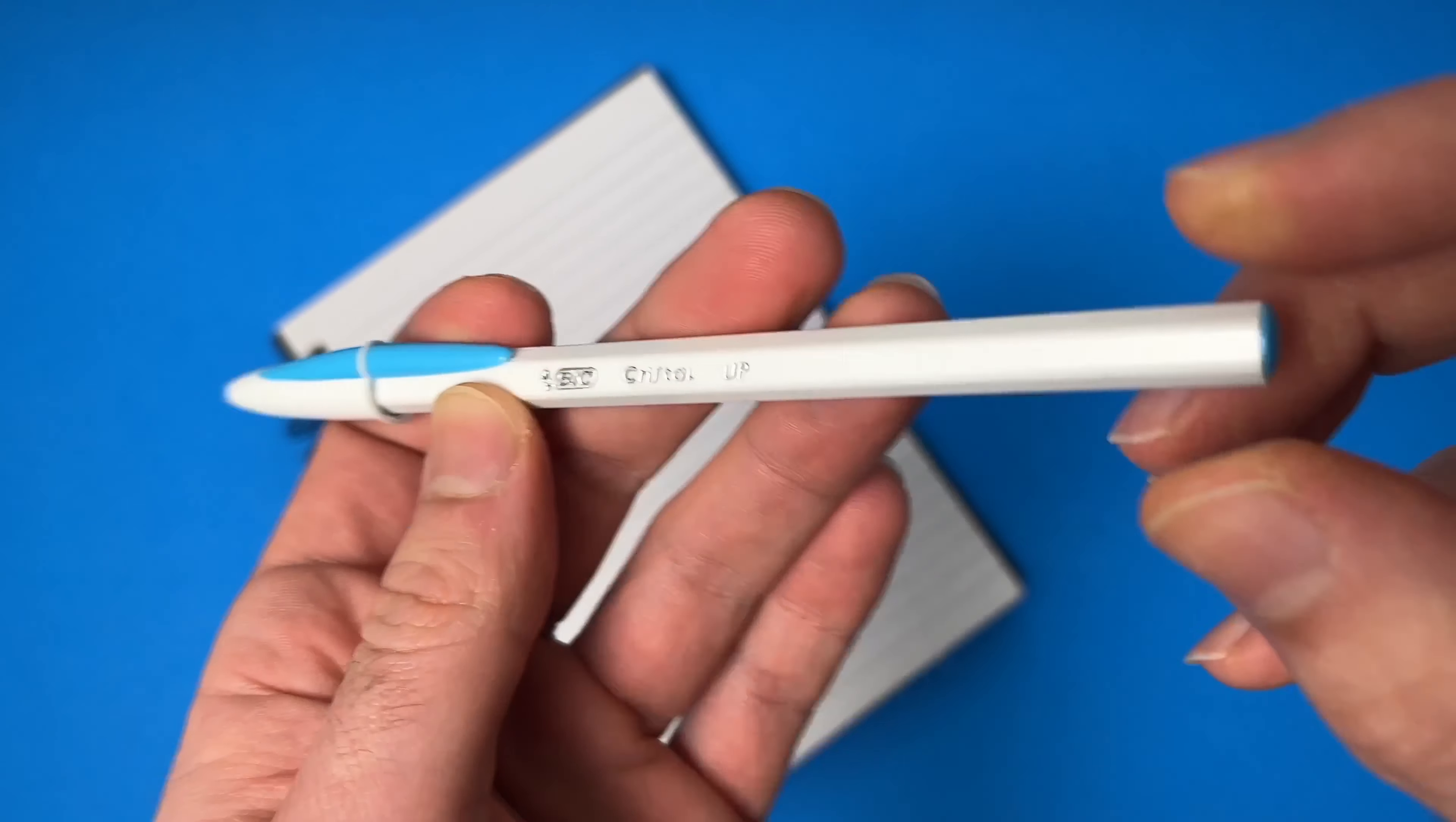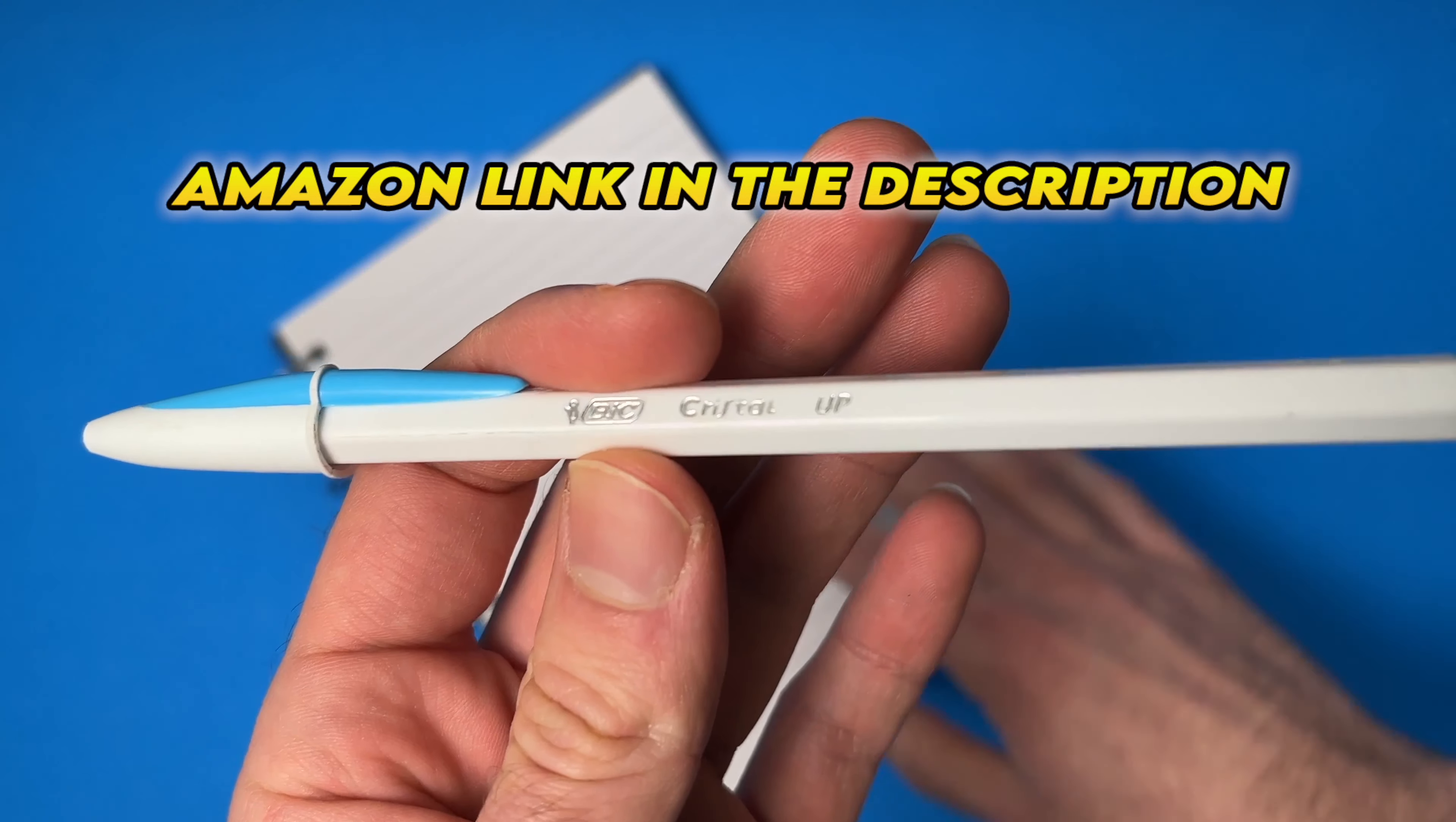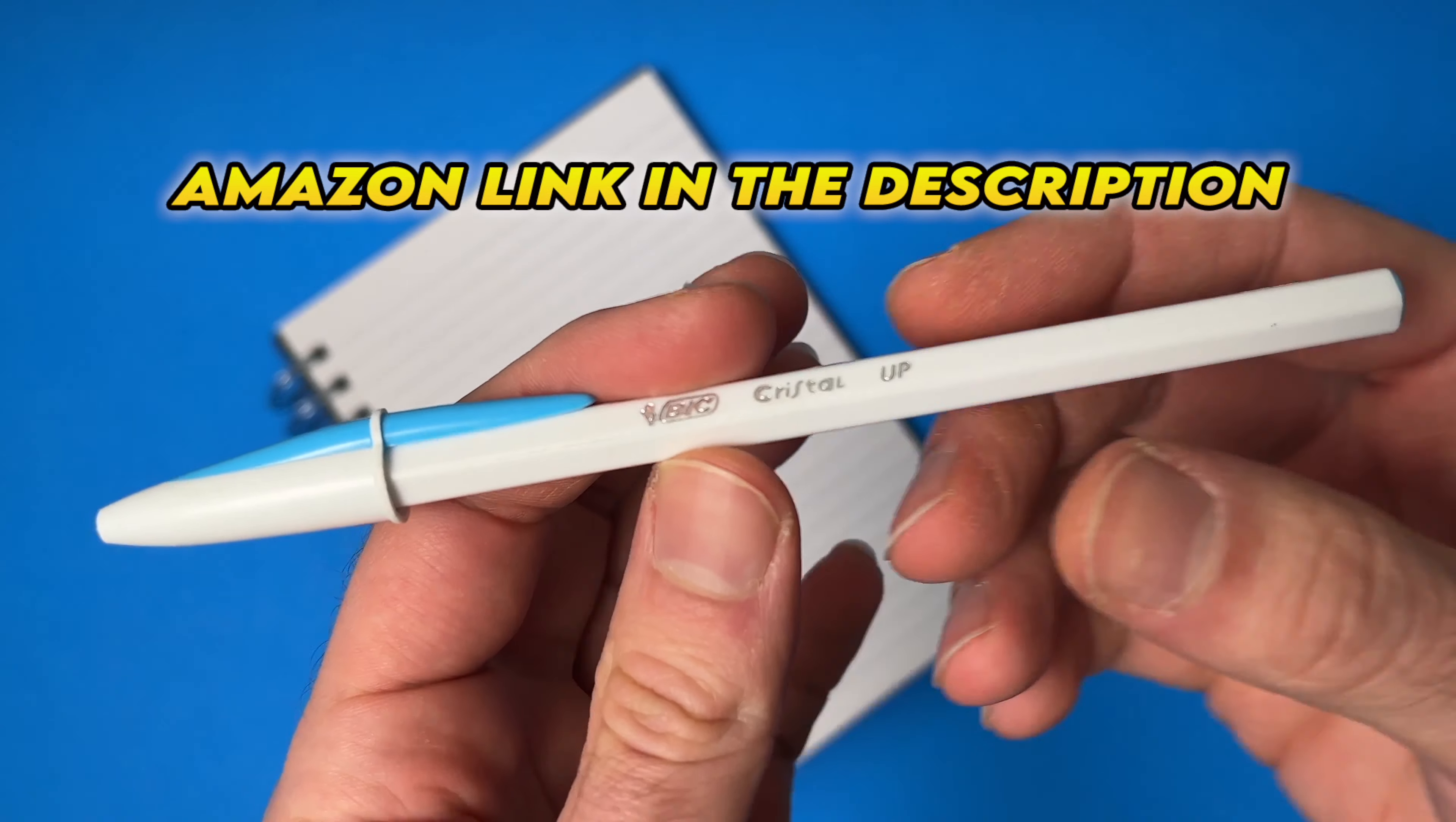In this quick review, I'll be checking out the Big Crystal Op, a pen with a medium point of about 1.2 millimeters.